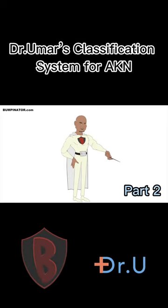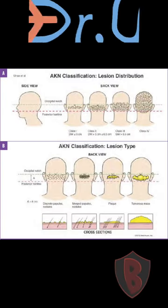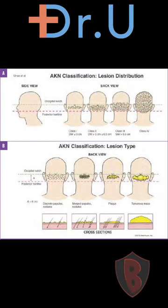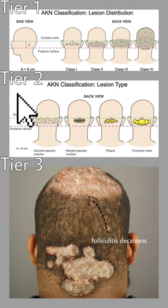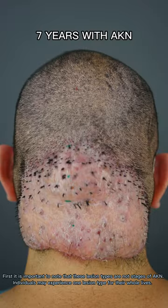This is part two on how to classify AKN bumps. Today we are looking at tier two. This tier will classify AKN bumps by its lesion type.